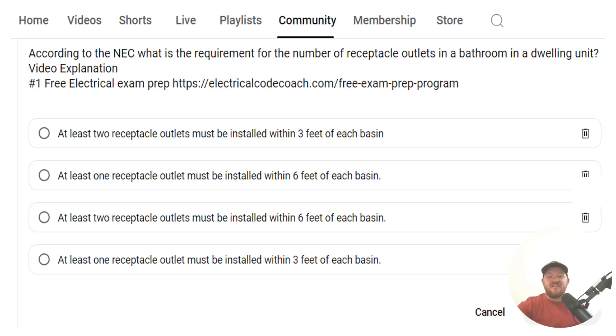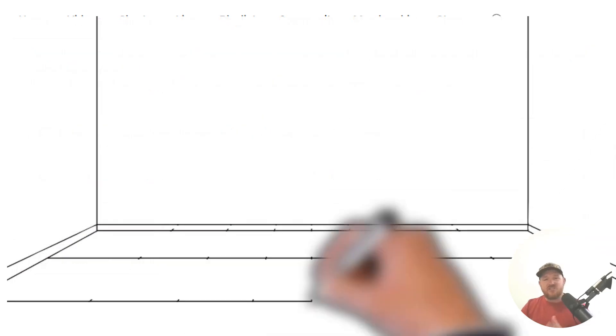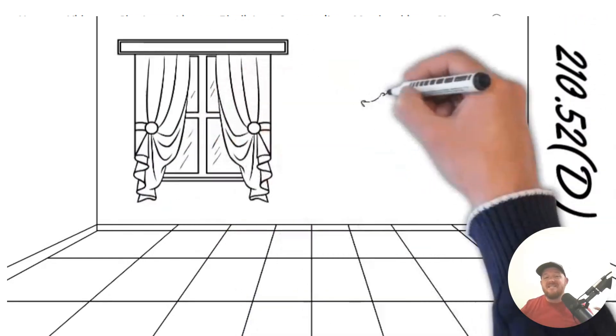And the correct answer is D. At least one receptacle outlet must be installed within three feet of each basin. And for this one, we're going to head to 210.52D.